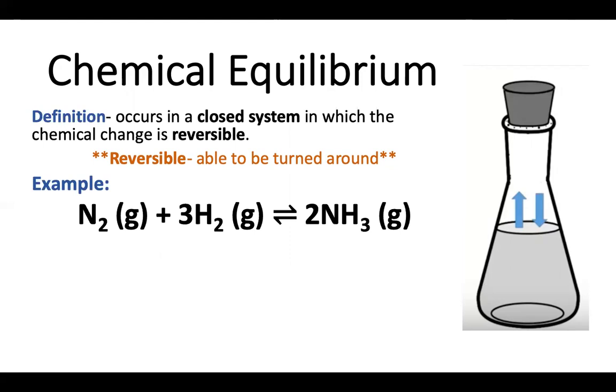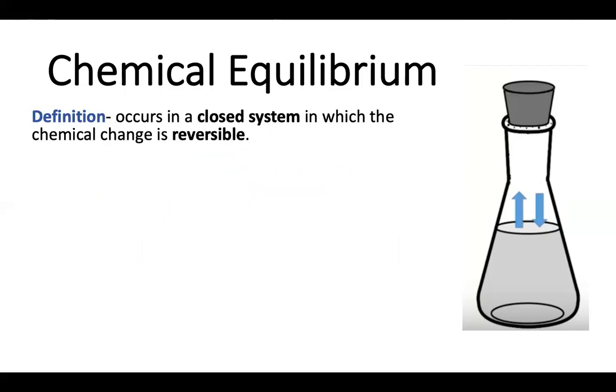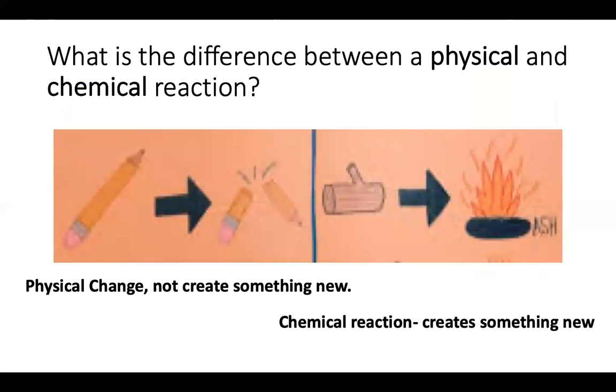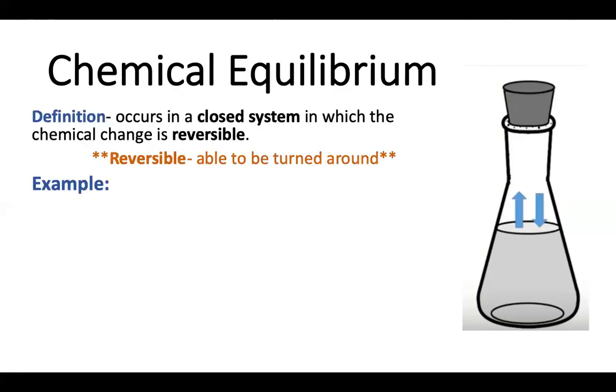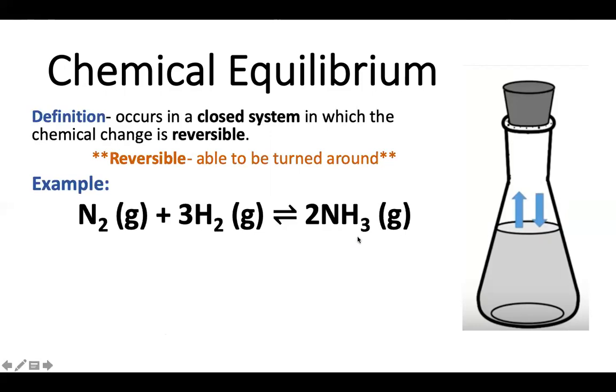An example is when we take nitrogen gas and hydrogen gas and we do a forward reaction and we make ammonia. But that ammonia can actually break down as a gas back into nitrogen and hydrogen. So here is the difference between just a plain old chemical reaction that we saw with the wood on the right-hand side turning into ash. We can't really reverse that. But in a chemical equilibrium reaction in a closed system, we actually can have the ammonia reversing its reaction and splitting apart into nitrogen and hydrogen again.